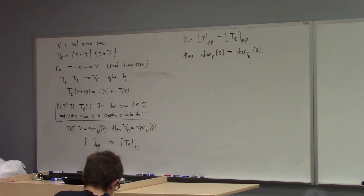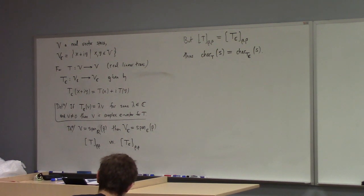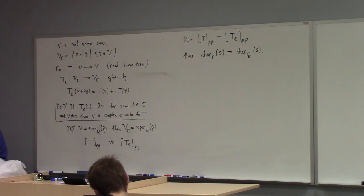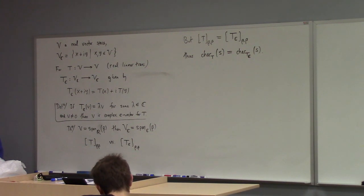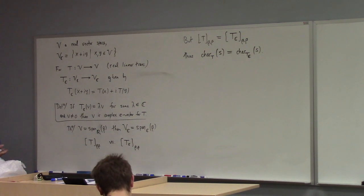What this all means is that if you find the eigenvalues for your matrix, for your given real transformation, you've already found the eigenvalues for the complexification just the same. So that's pretty neat.